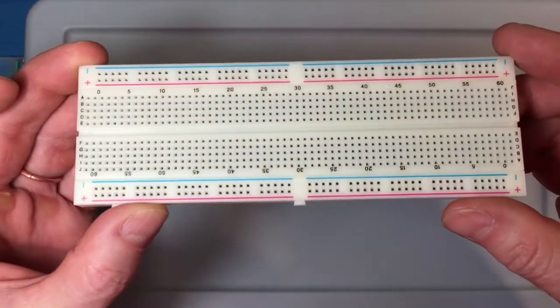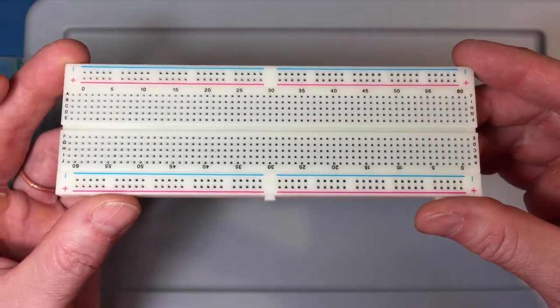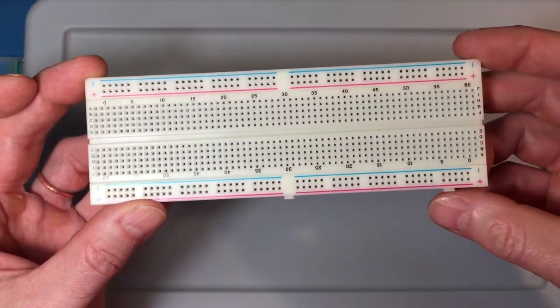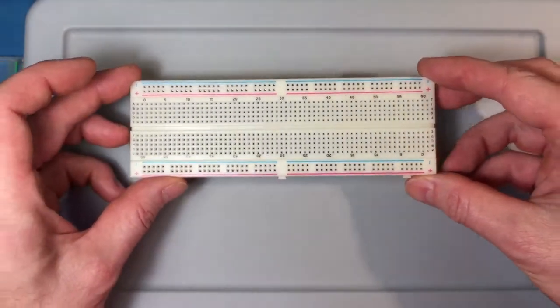This is the breadboard that came in your kit. So it's a connectivity matrix where you plug parts into the holes and it functions to hold them on to the breadboard and also to make electrical connections.